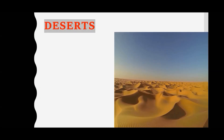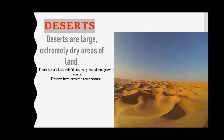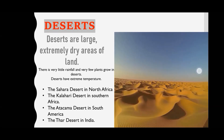What are deserts? Deserts are large areas of land that are extremely dry. There is very little rainfall in desert areas, and that is why very few plants grow. Deserts have extreme temperatures because the sand present in the desert gets heated very fast, as well as it cools down very fast.